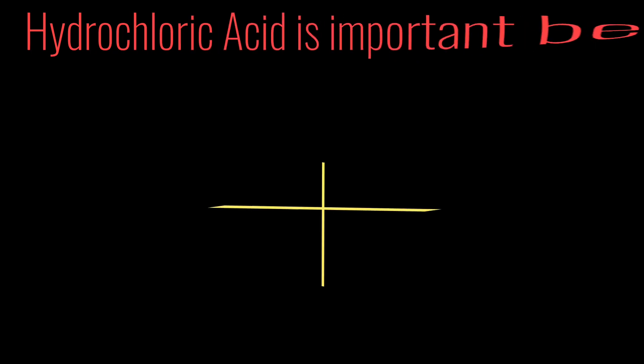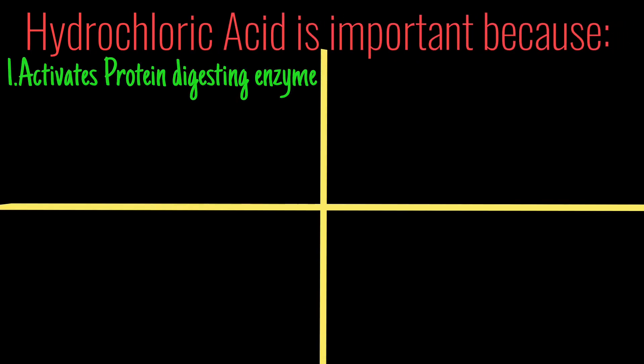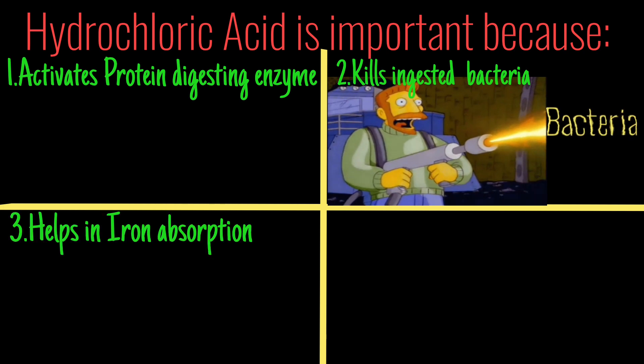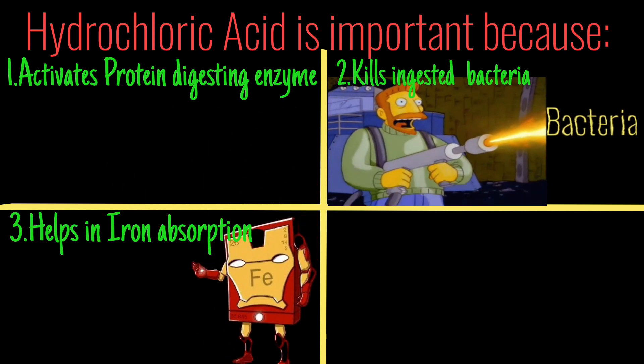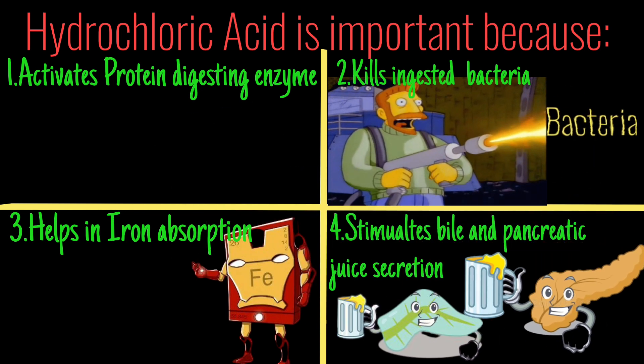Hydrochloric acid is important because it activates protein-digesting enzymes, kills ingested bacteria, helps in iron absorption, and stimulates bile and pancreatic juice secretion.